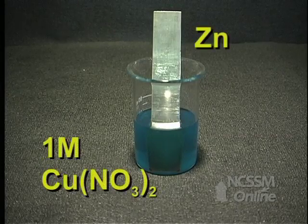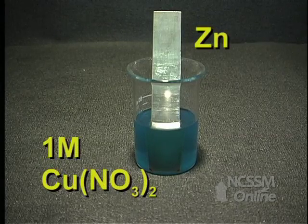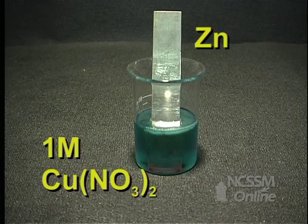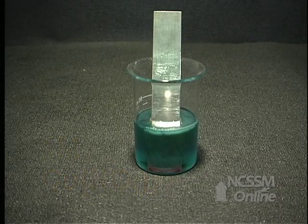A strip of zinc metal is placed in a blue solution of one molar copper(II) nitrate. The copper +2 ion has a greater electron attracting ability than the zinc ion.